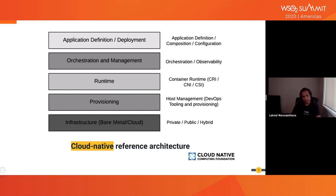The container network interface, CNI, provides APIs to plug in different container network runtime implementations. CNI comes with inbuilt network plugins such as Bridge, VLAN, IPVLAN, DSCP, and so on. The container storage interface, CSI, provides a common standard to connect a container orchestration platform to persistent storage.